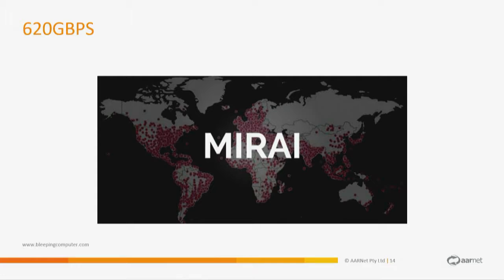Unlike previous attacks relying on UDP amplification, Mirai was interesting because it just involved throwing a large amount of GRE traffic at the website and hoping it would go away. After the attack on Krebs, the author actually dropped the source code online, which meant that everyone has it but also meant we could dig through it to find out how it spread. It targeted CCTVs and DVRs, used Telnet to find them, and had 68 sets of usernames and passwords — and that's all it really needed to summon up 620-ish gigabits of denial of service traffic.